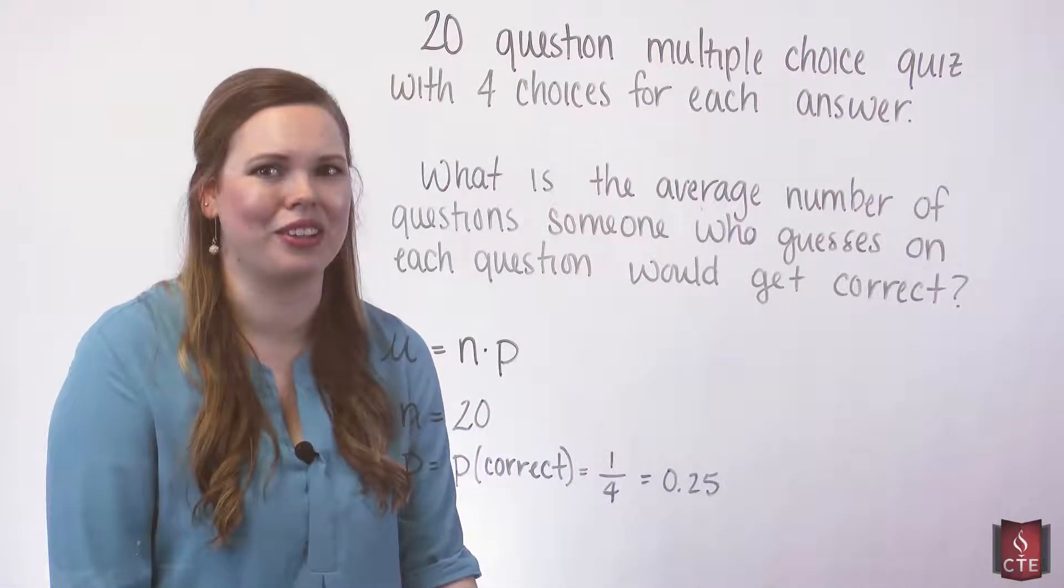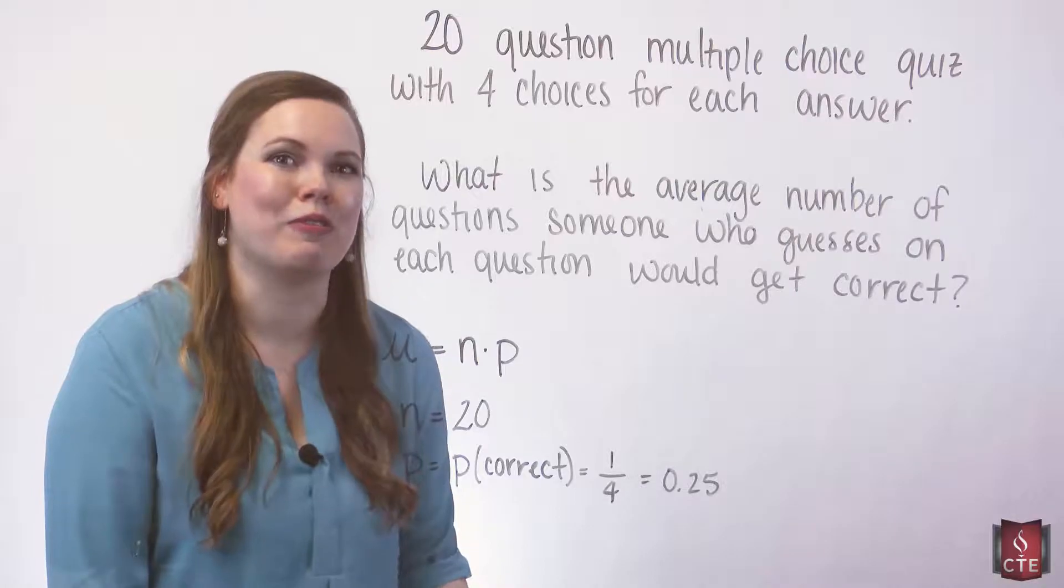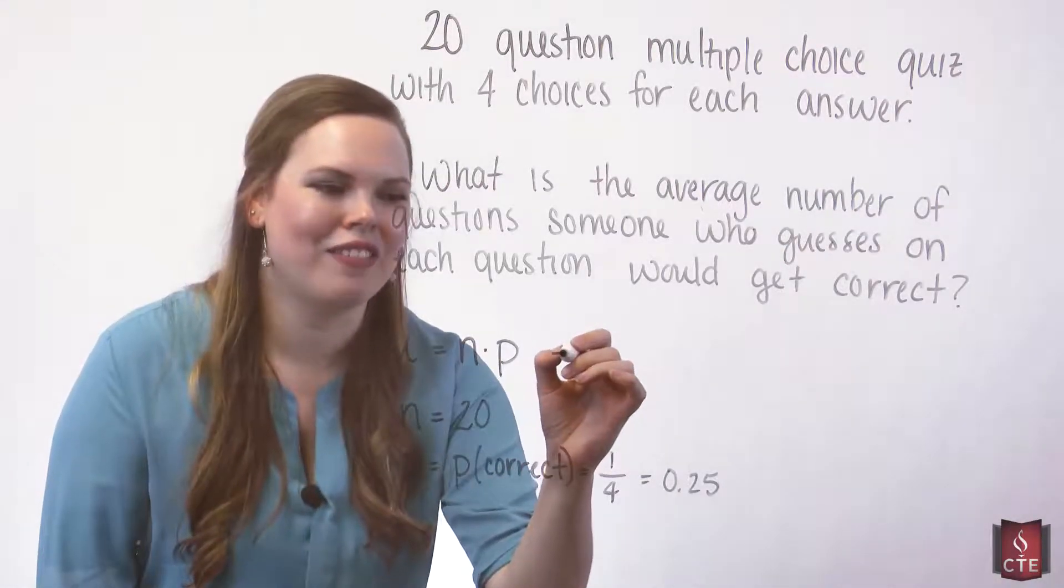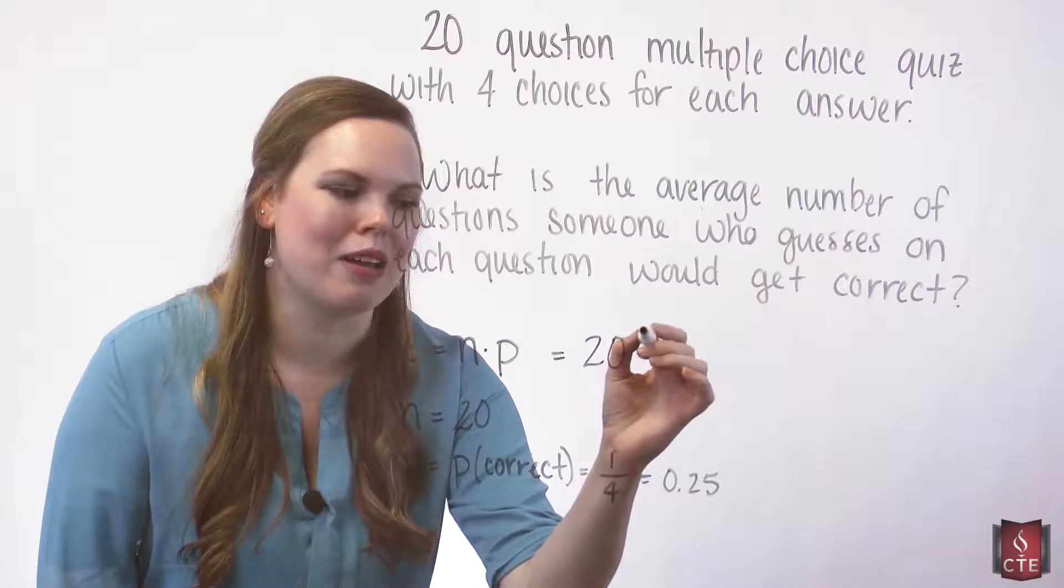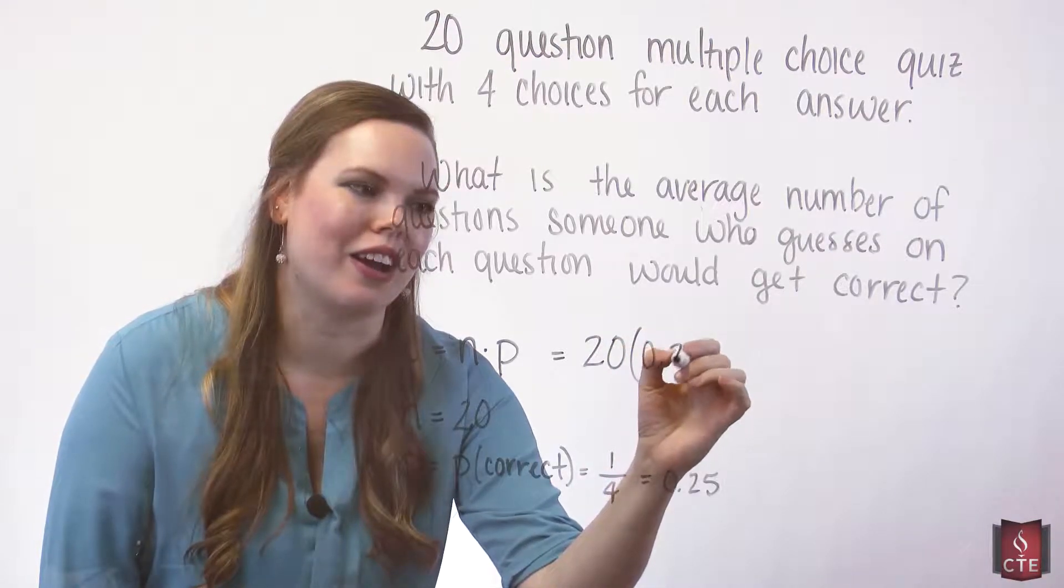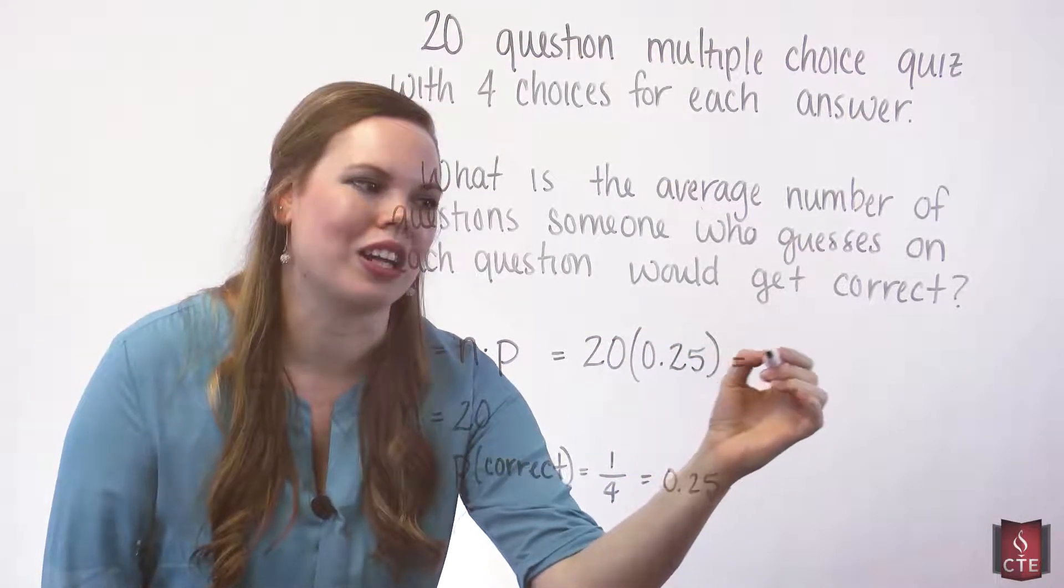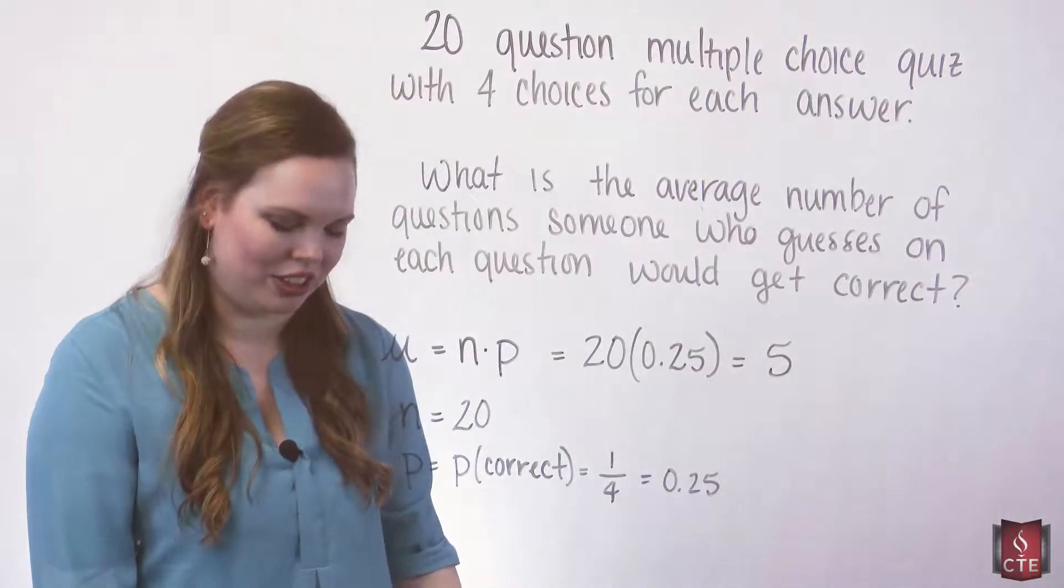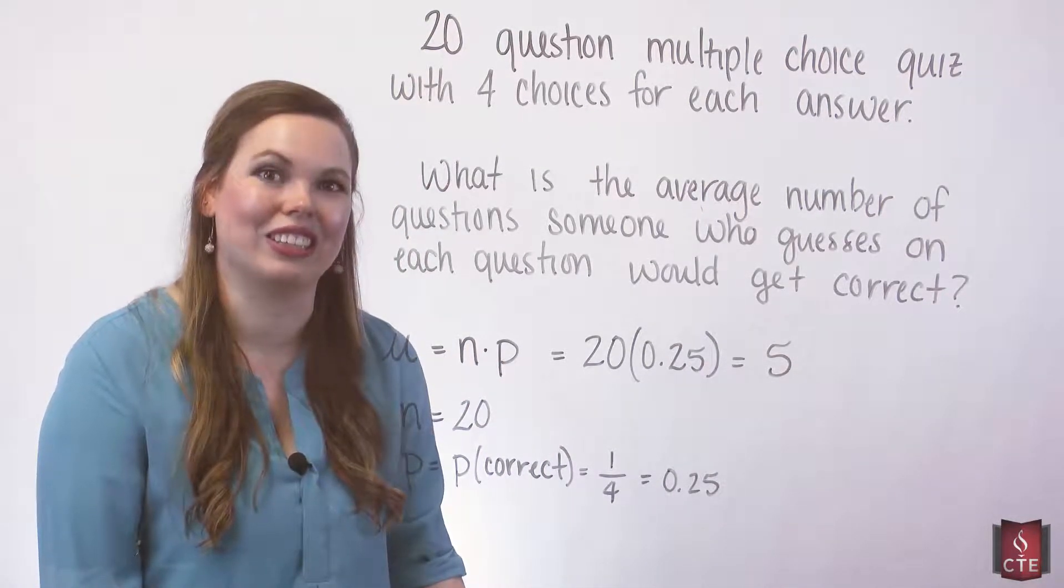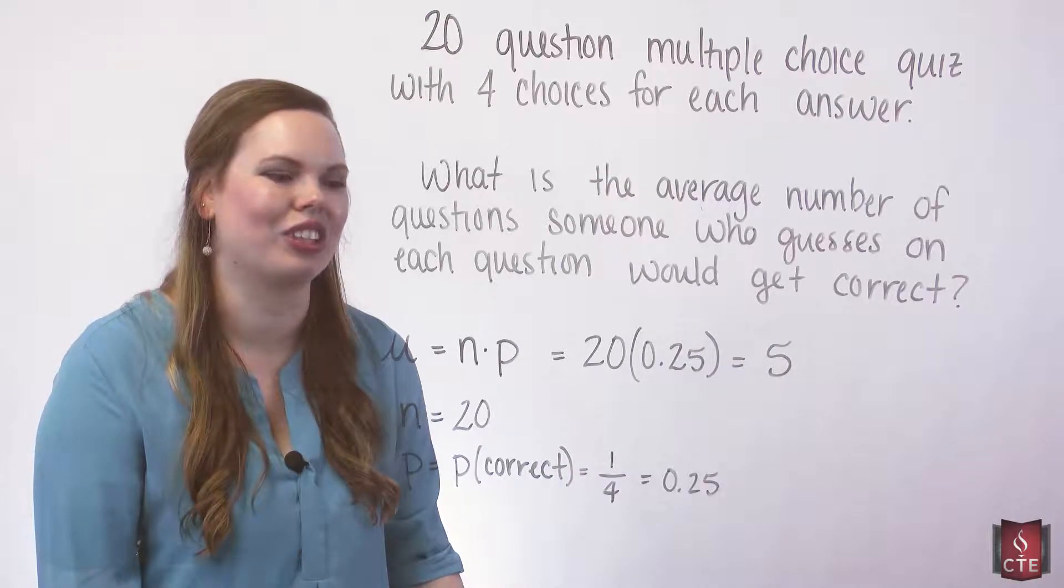Fixed number of trials, another requirement for a binomial. So simply finding the average is just taking the 20 and multiplying it by 0.25, one-fourth of 20. On average, a student is going to get five questions correct if they were to guess on every question.